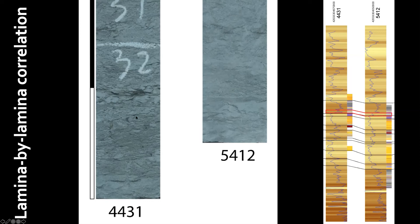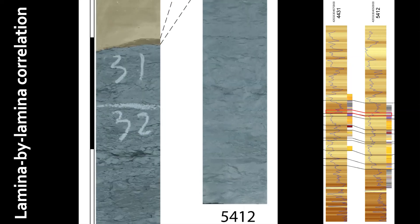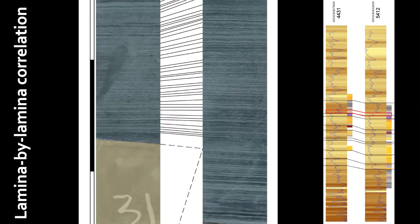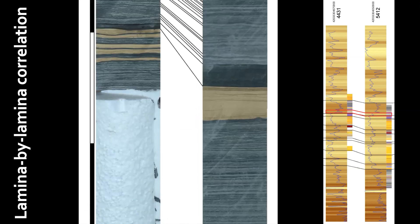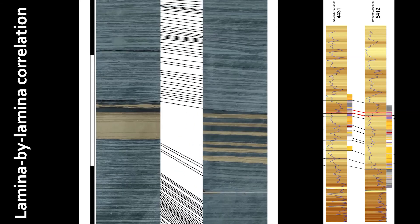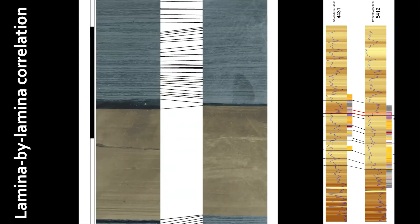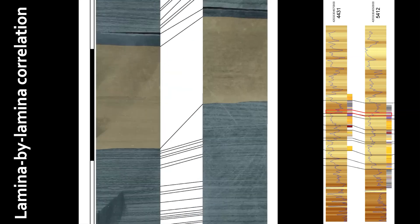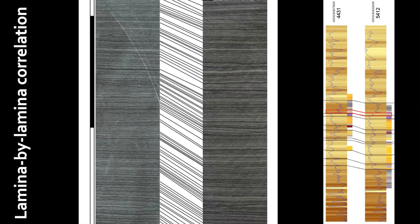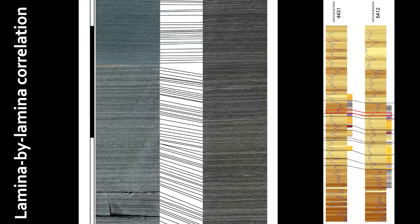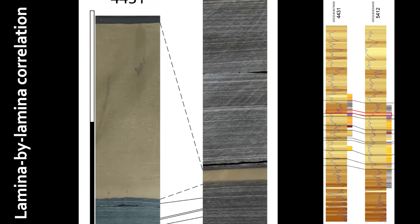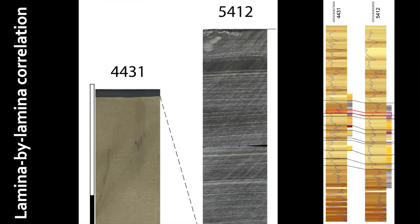Well 4431 is on the left and well 5412 is on the right. Turbidites and hybrid beds are highlighted in yellow. We are going upward in the stratigraphy. There is a turbidite colored in yellow on the left, and you can see all the laminations that I was able to correlate — all those correlation lines are pretty confident. This is an amazing set of correlations at a very fine scale. Some of the turbidites are well correlated, while some turbidites pinch out or thin a lot. Long sections of laminations are almost perfectly correlatable across the two wells.